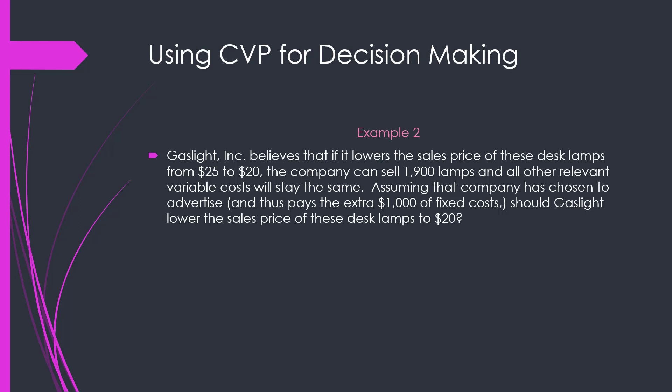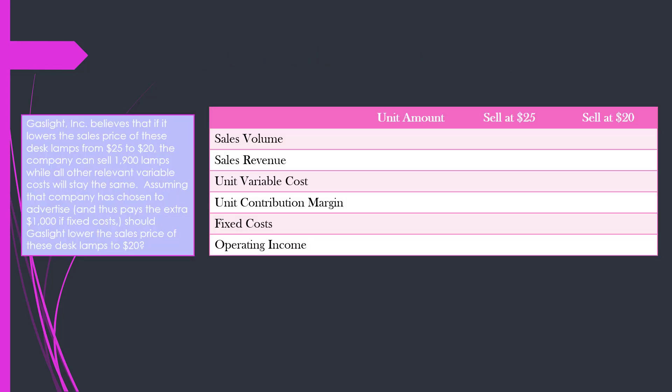So what should Gaslight choose — to advertise or not to advertise? They should advertise, because advertising gives them the largest amount of operating income. Let's take another example: Gaslight believes they can greatly increase their sales volume if they lower their price. If they lower the sales price of these new LED desk lamps from $25 down to $20, the company believes they will be able to sell 1,900 of them, but all other relevant variable costs stay exactly the same. Assuming the company is going to advertise and pay that extra $1,000 of fixed cost, is this a good plan?